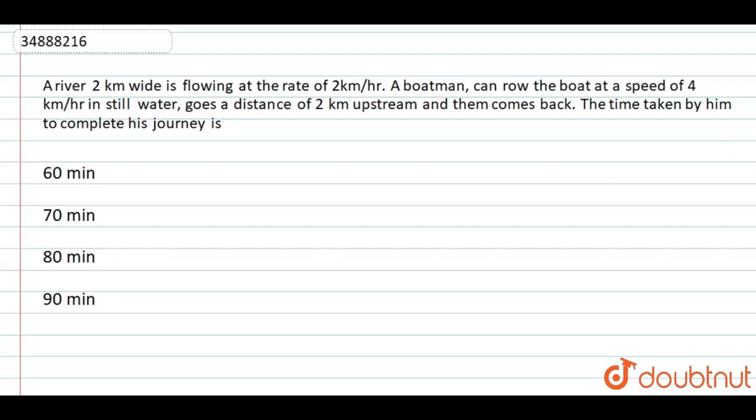Hello guys, so our question is: A river 2 km wide is flowing at a rate of 2 km per hour. A boatman can row the boat at a speed of 4 km per hour in still water and goes a distance of 2 km upstream and then comes back. The time taken by him to complete his journey is.